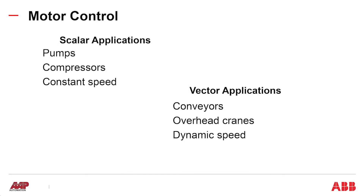In our example today, we selected scalar motor control. This is the easiest to set up and is typically used for constant load applications such as pumps, compressors, or running at a constant speed. The other option was vector — it's a little bit more complicated, but it is the best for starting high inertia torque and for maintaining a tighter speed tolerance. Best applications would be for conveyors, overhead cranes, and dynamic speed applications.